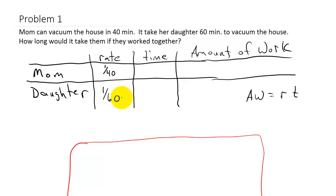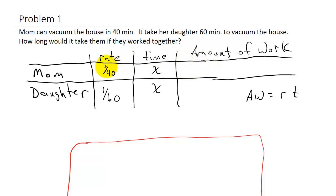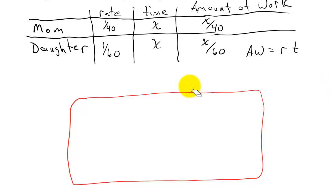The time is what we're looking for — how long would it take them working together? Since they're both vacuuming until they finish, their times are the same, which we'll call x. The amount of work for mom is rate times time: one over 40 times x, which is x over 40. For the daughter, one over 60 times x is x over 60.